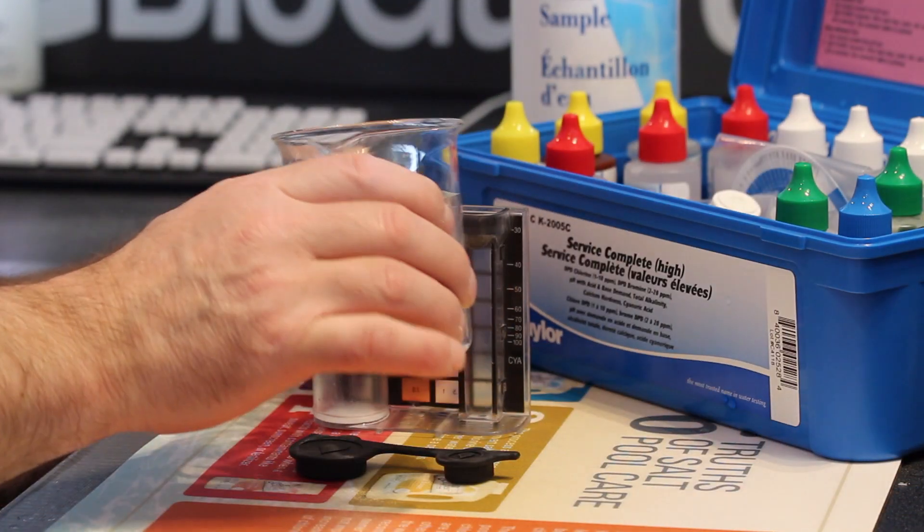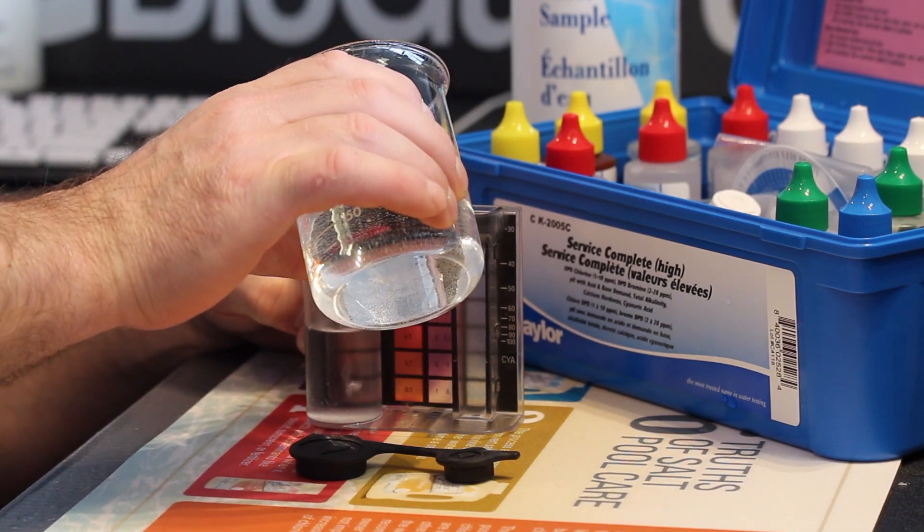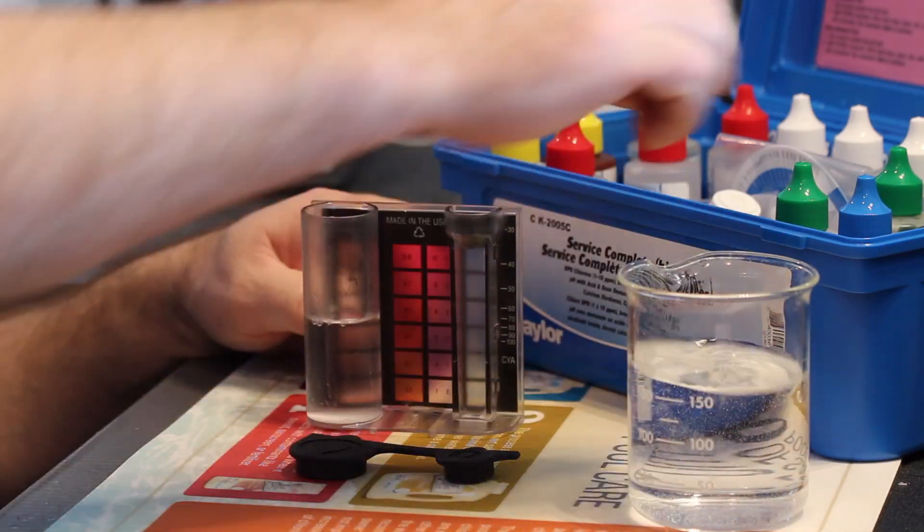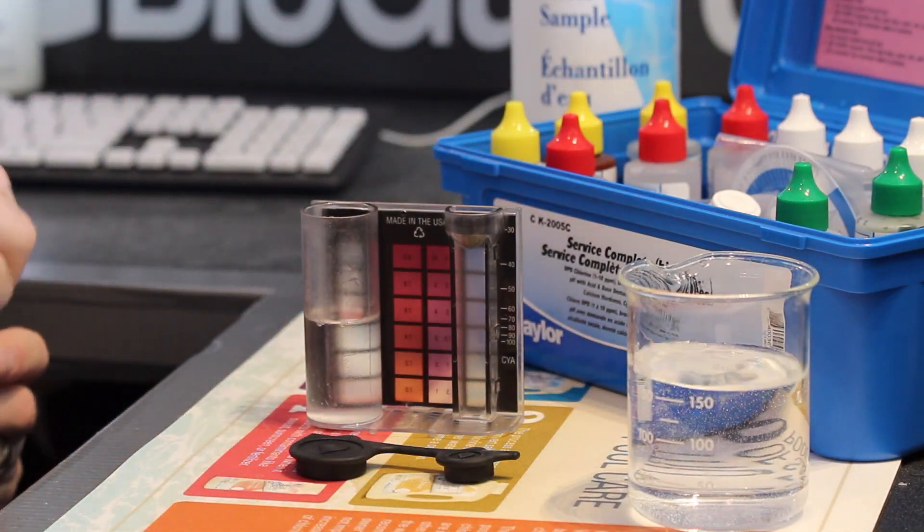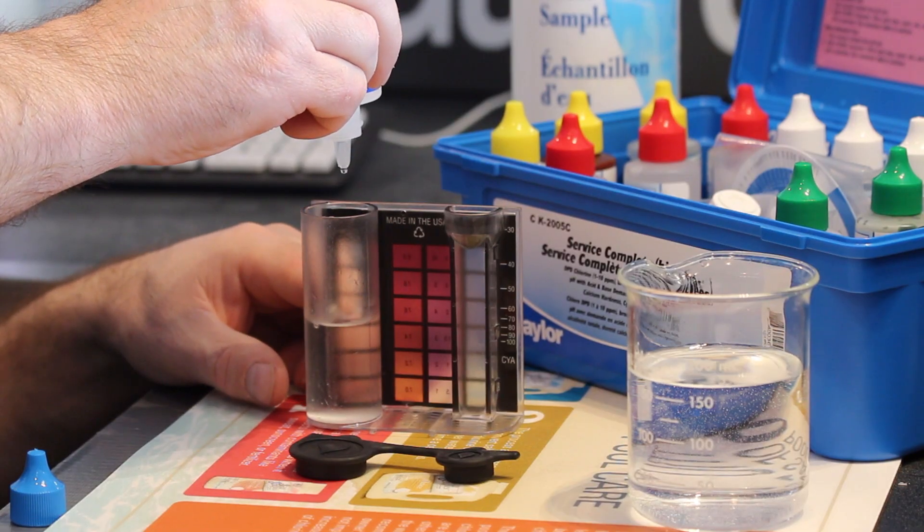To test calcium hardness, rinse and fill the large comparator tube to the 25 milliliter line with your pool water. Then add 20 drops of reagent number 10. Swirl to mix.